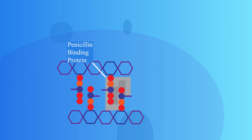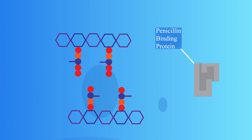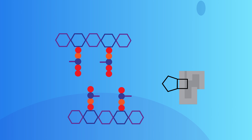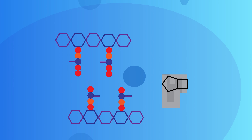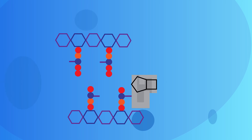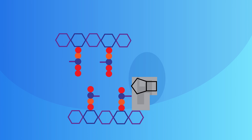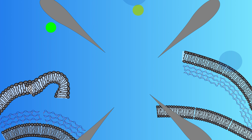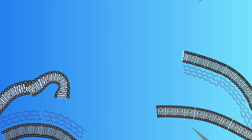Penicillin binding proteins make new peptidoglycan as the cell grows. Penicillin, unsurprisingly, binds penicillin binding protein and interferes with its ability to synthesize new peptidoglycan, leading to cell death.